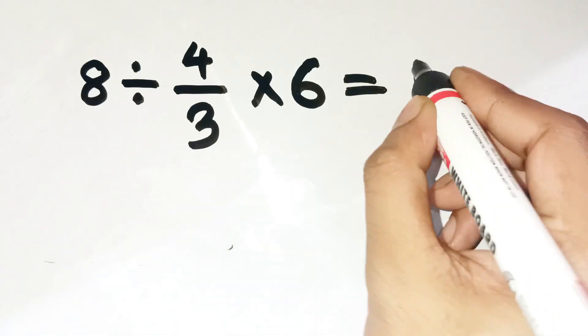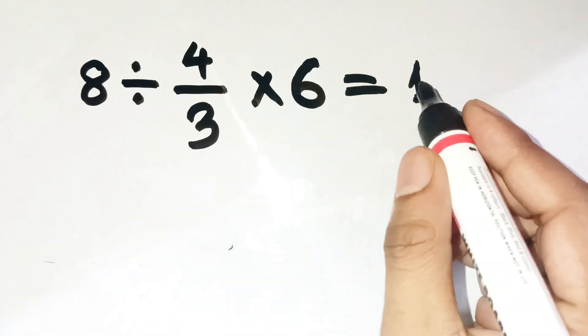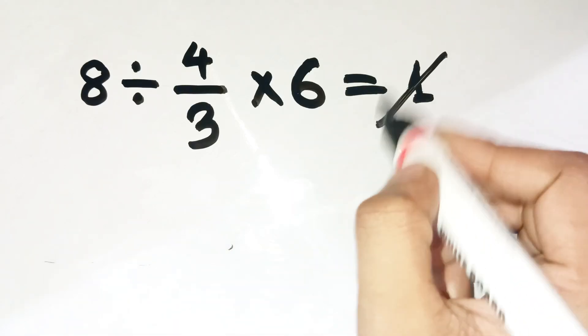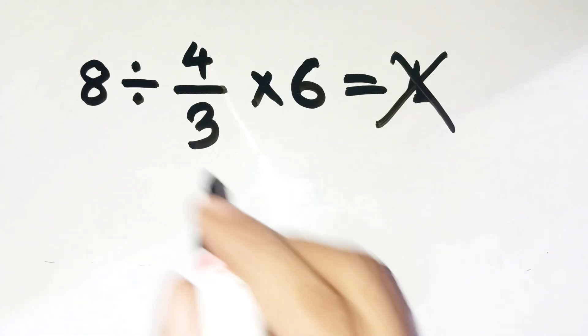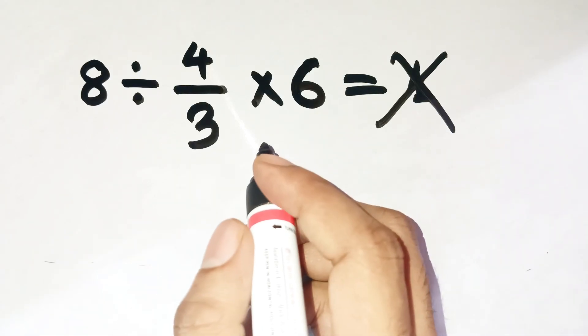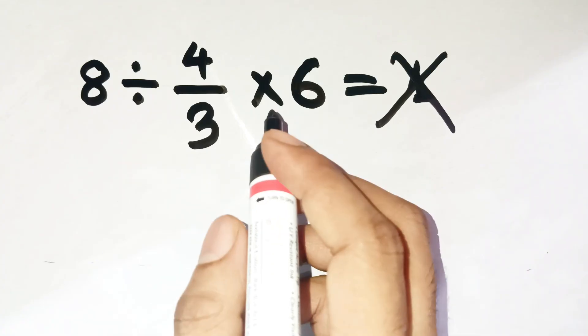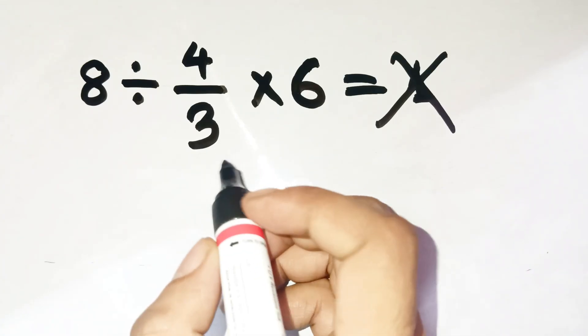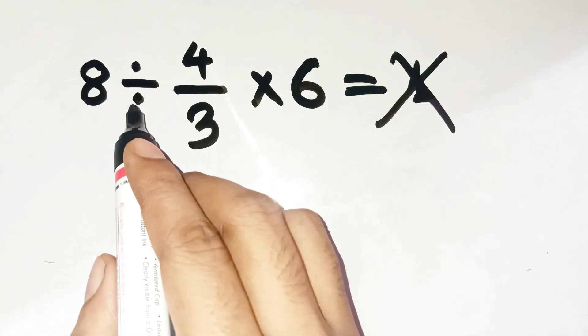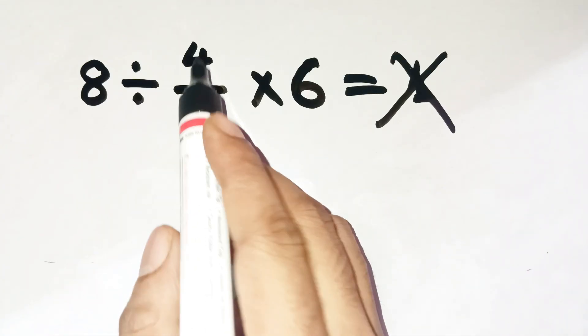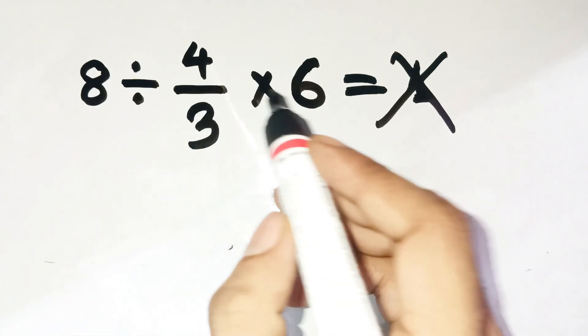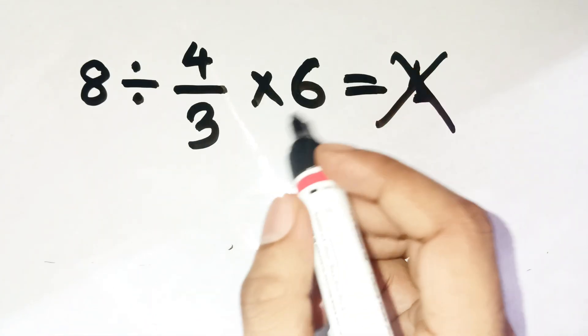Almost everyone jumps straight to 1, but that's a huge mistake. Let's talk about this expression: 8 divided by 4 thirds times 6.